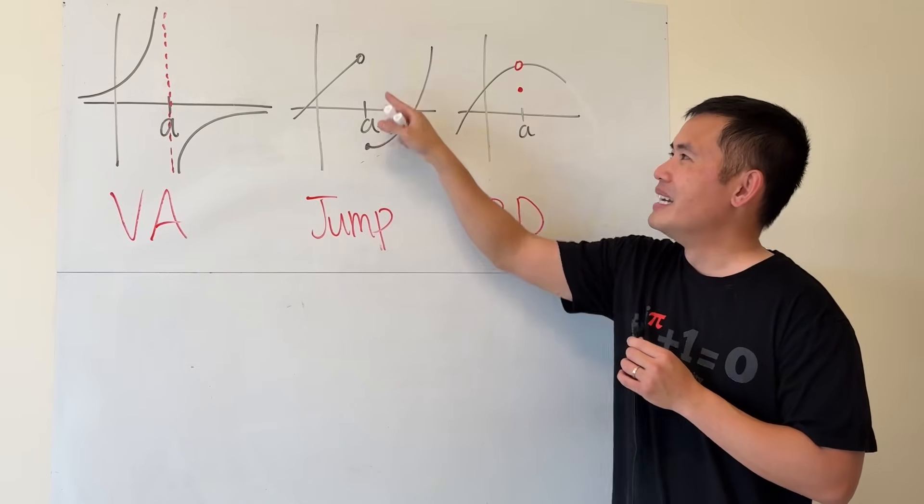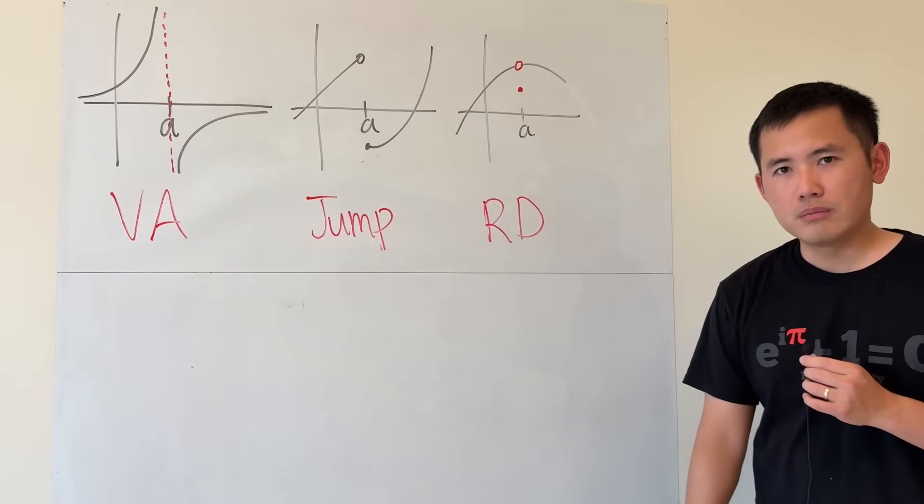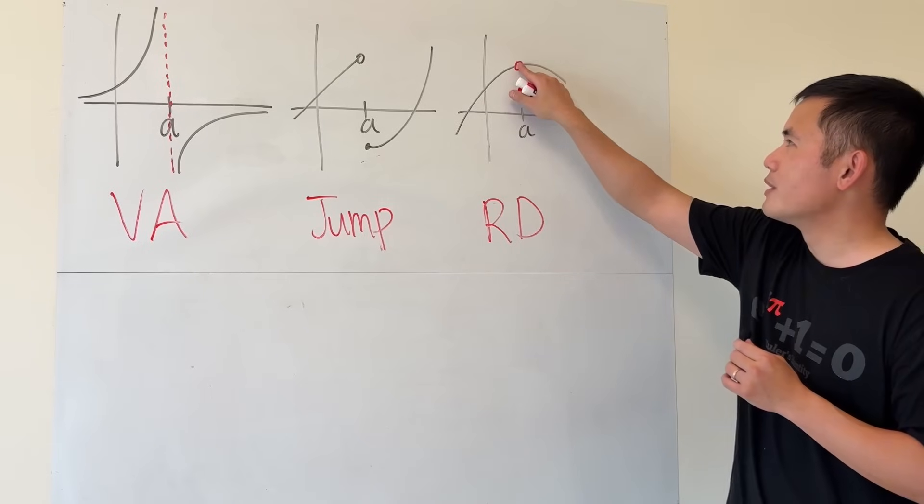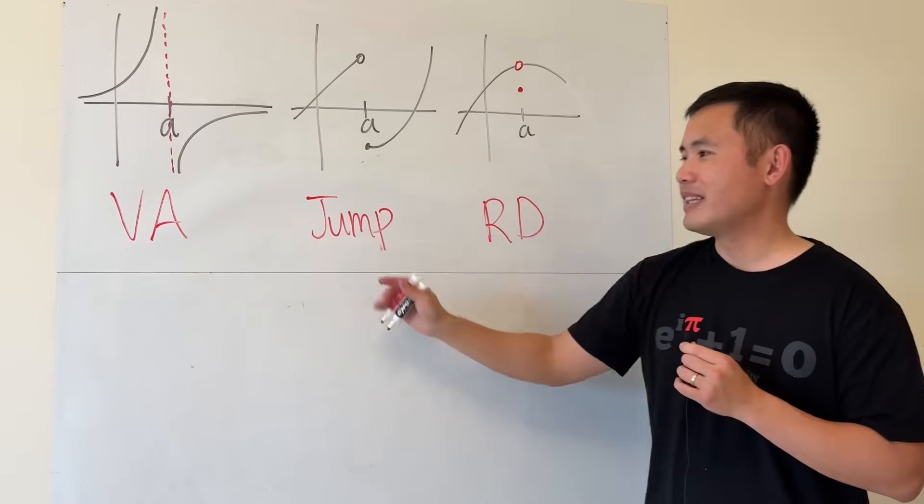The real situation is that if you fill in the open circle here, the graph is still disconnected, so it's still discontinuous. But this right here, if you fill in the open circle, the graph would be happily connected, right? So that's the difference between this and that.